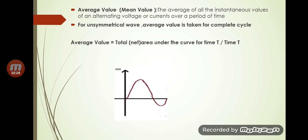The average value is equal to the total or net area under the curve for a time period T divided by the time period T. This is the expression for finding out the average value.